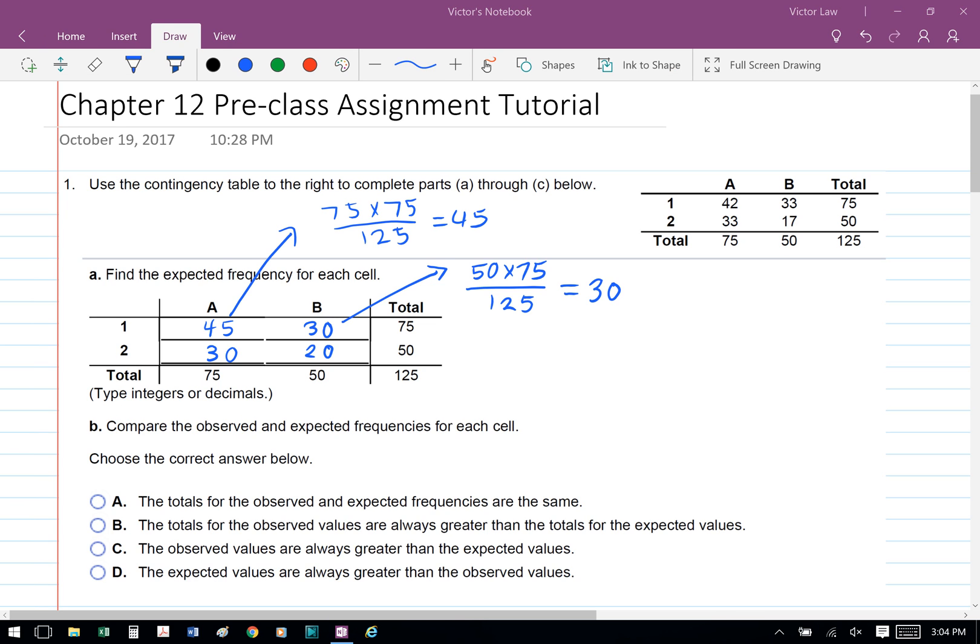To calculate the expected frequency for cell A1, we're going to take the column A total, which is 75, and then take the row 1 total, which is 75 as well. We times them together and then divide it by 125, the total amount, and we get 45 for cell A1.